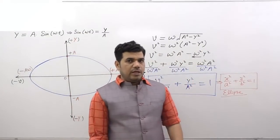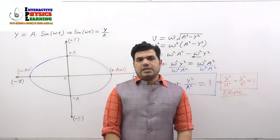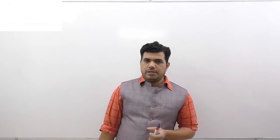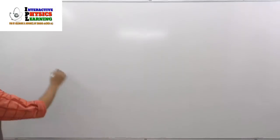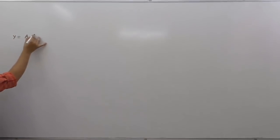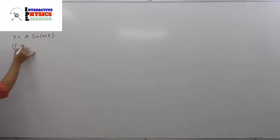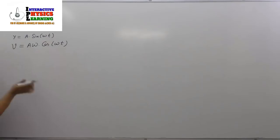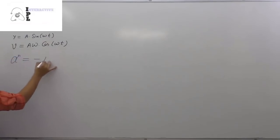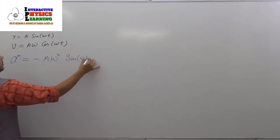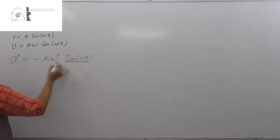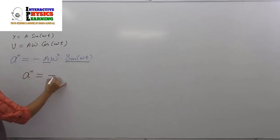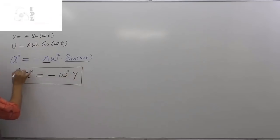Now we will see what relation acceleration has with displacement y — acceleration versus displacement. To find this, we go back to the displacement equation y = a sin(ωt). Differentiating gives velocity = aω cos(ωt); differentiating again gives acceleration = -aω² sin(ωt). Since sin(ωt) = y/a, we can write: acceleration = -ω²y. This is the relation between acceleration and displacement.